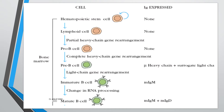As we can see in the figure, the hemopoietic stem cell is naive and does not have any surface antibodies. Upon stimulus it divides and starts differentiating to form lymphoid cells, and at this stage partial heavy chain gene rearrangement takes place. This lymphoid cell becomes the pre-B cell, where complete heavy chain gene rearrangement takes place. During this process, complete heavy chain gene rearrangement has taken place and you have the IgM mu chain plus a surrogate light chain in these pre-B cells.